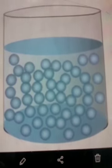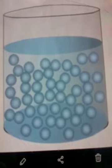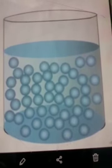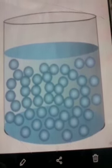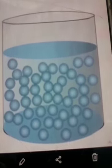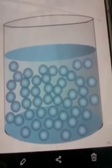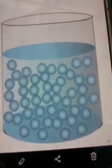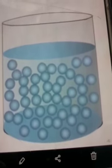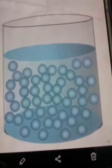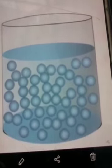Since molecules are free to move, when we flow liquid from one container to another the molecules slip, so it becomes easy for us to transfer a liquid from one container to another. This may not be possible in solids because in solids the molecules do not slip and they are very strongly attracted to each other.